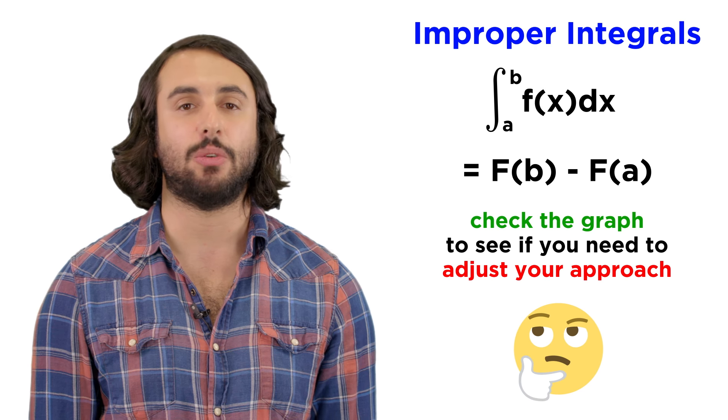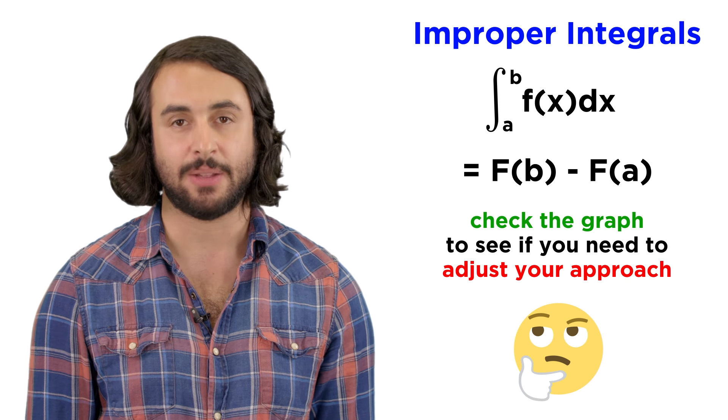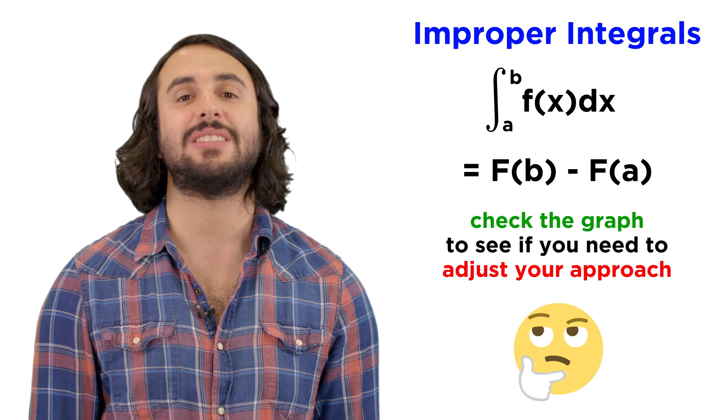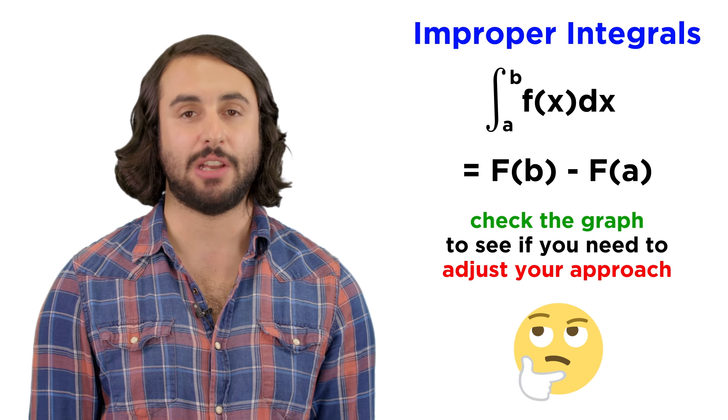So as you go about integrating, if something looks like it might have an asymptote of some kind, check the graph of the function being integrated over the specified interval to see if you need to adjust your approach accordingly. With that understood, let's check comprehension.